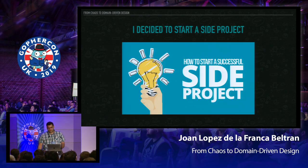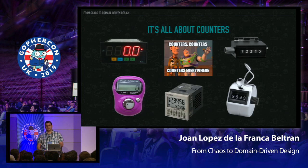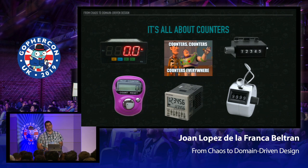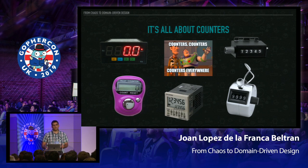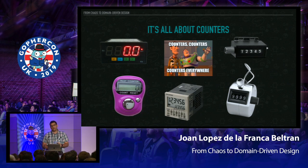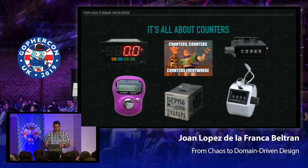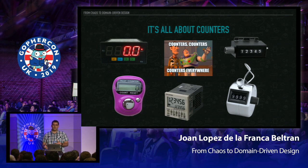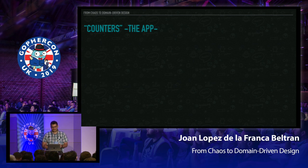So I decided to start a side project related with that observation. That side project is all about counters — all kinds of counters, counters everywhere. I want to be able to count how many movies I've seen during last year, how many countries I visited, how many books I've read, and so on. But it won't be only about counting — it will also be about logging. So beyond knowing the movies count, I also want to know what movies I've seen and when I saw each of them. After spending a lot of time thinking about it, I decided to name it 'Counters.' Very original.